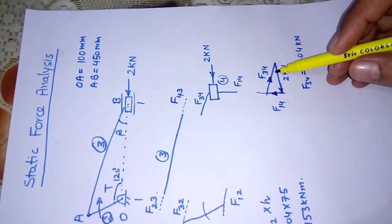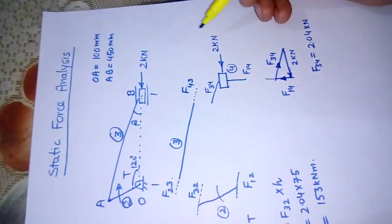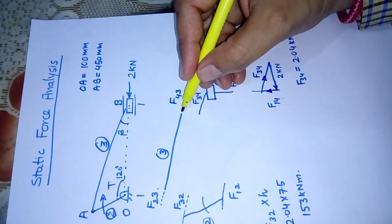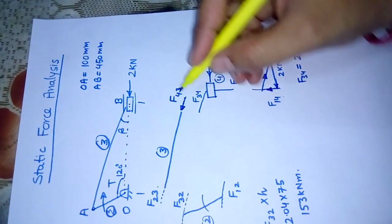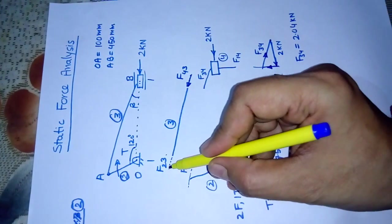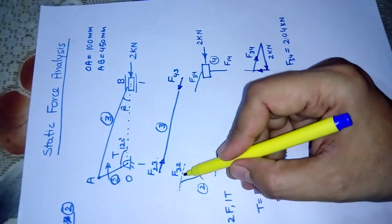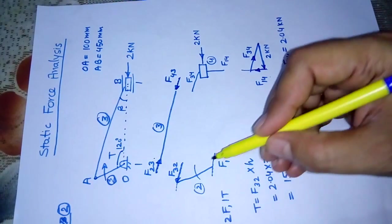Once we have determined F34, we can go back to link number 3. That means F43 is equal to F34 but in the opposite direction, so it acts like this. Similarly, F23 acts like this.